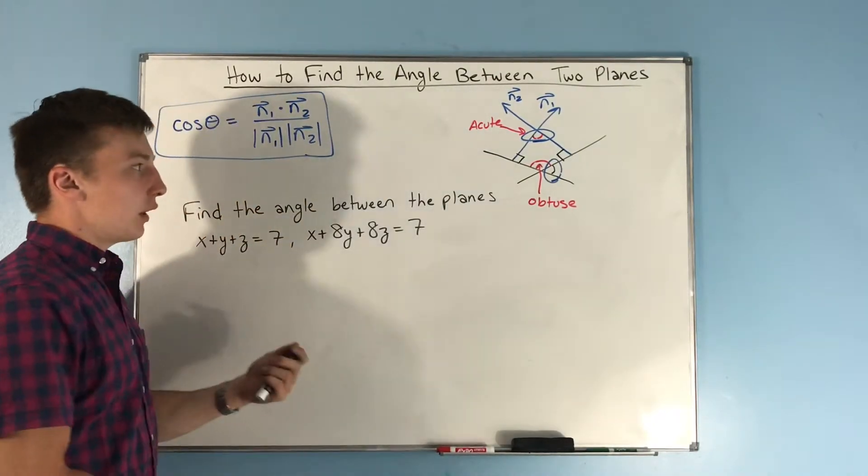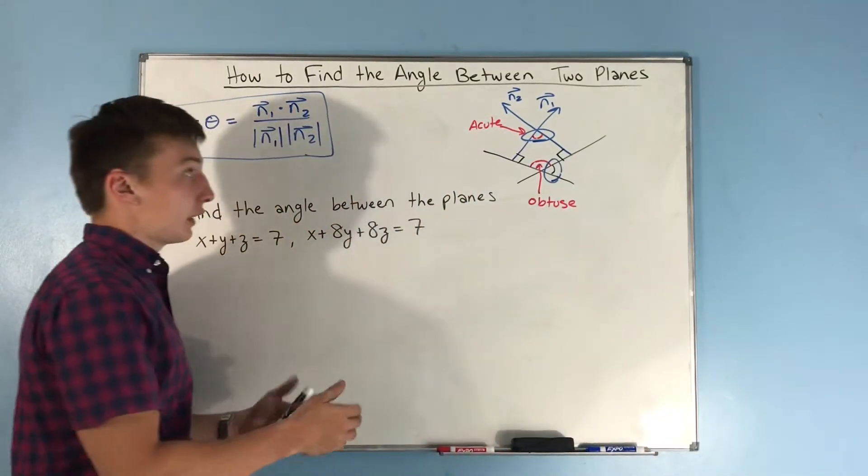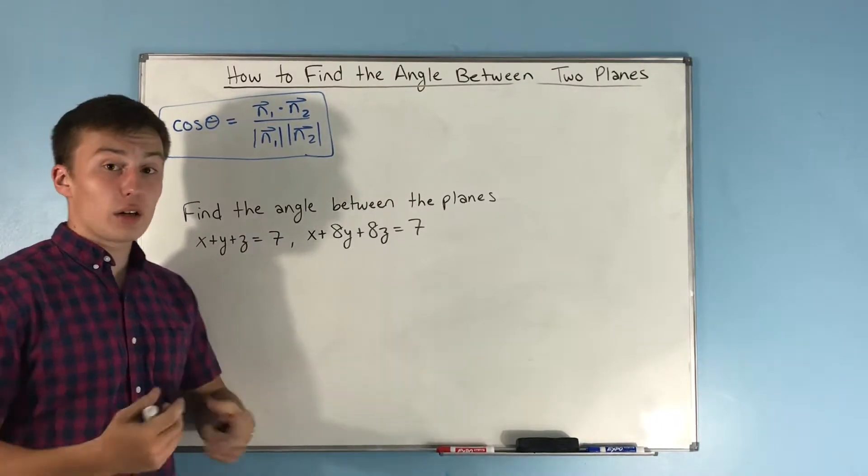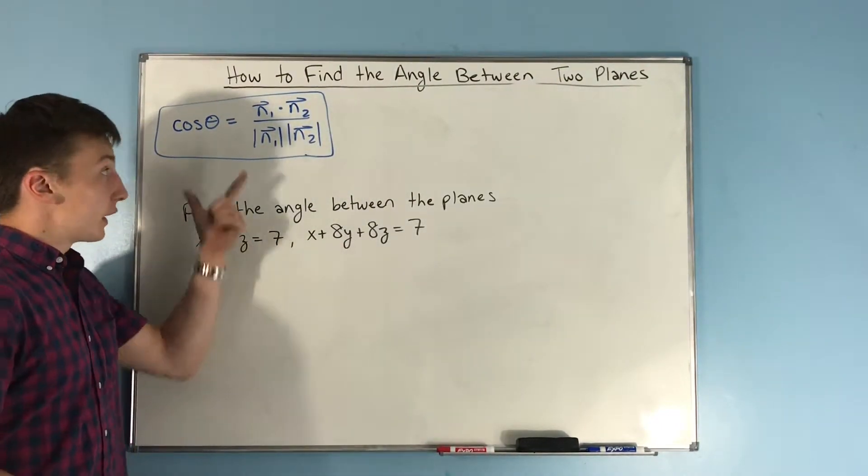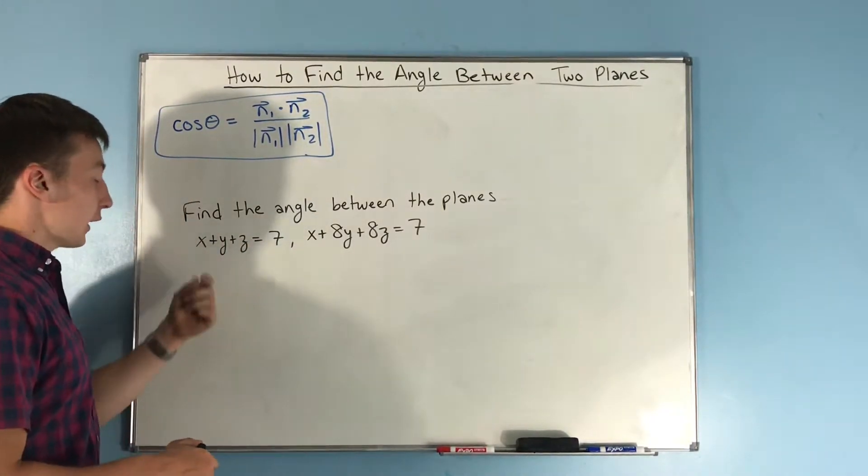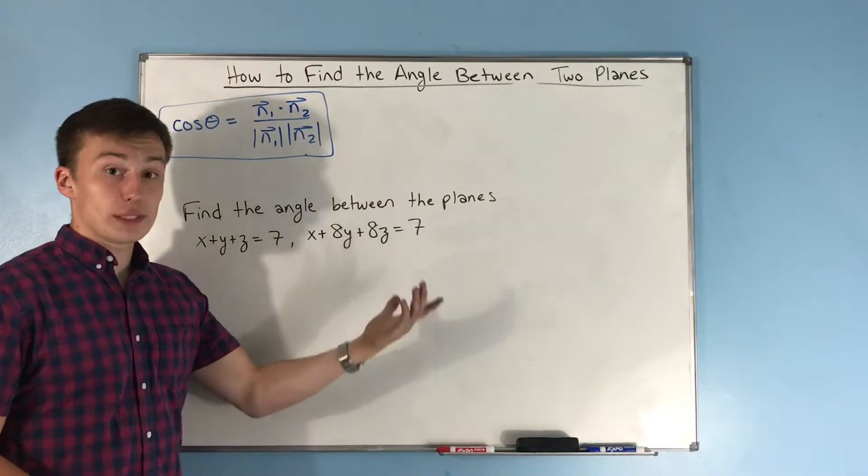Okay, so I just kind of wanted to make that clear to you. If that was something that you kind of ran into as just trying to understand this formula. So now that we've dealt with that, and we kind of understand that we are actually finding the angle between two planes with this formula, let's find the angle between the two planes: x plus y plus z equals 7, and x plus 8y plus 8z equals 7.